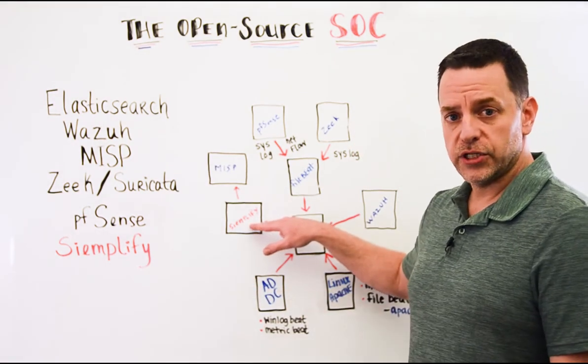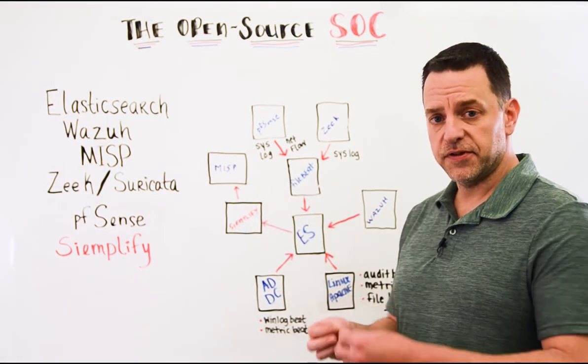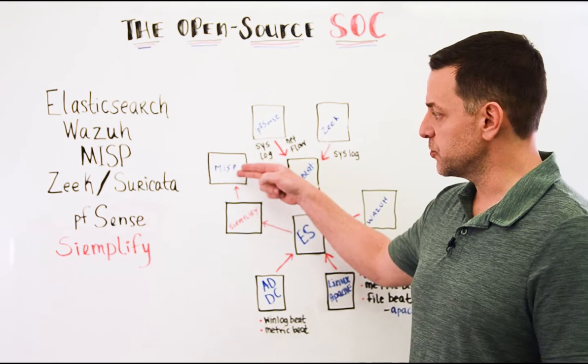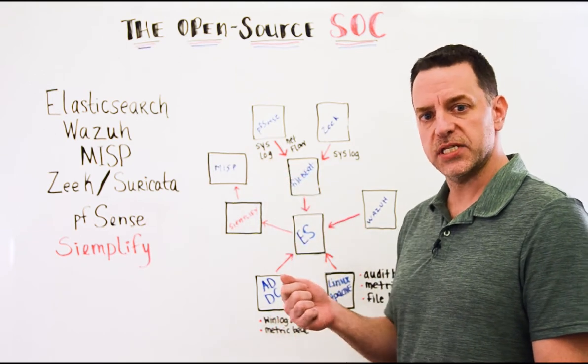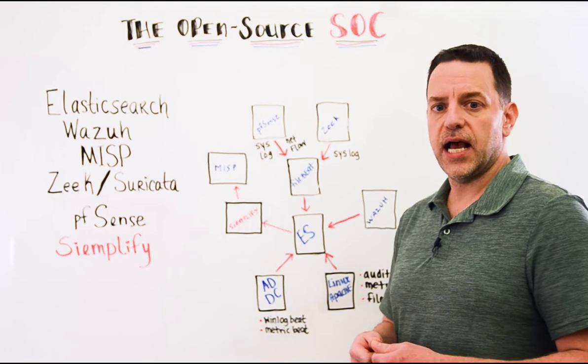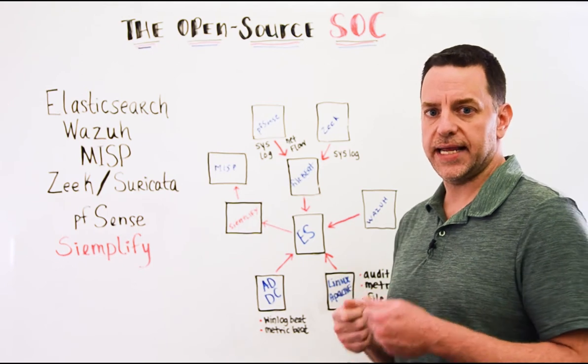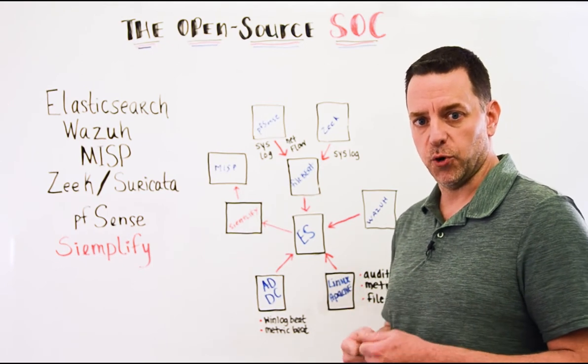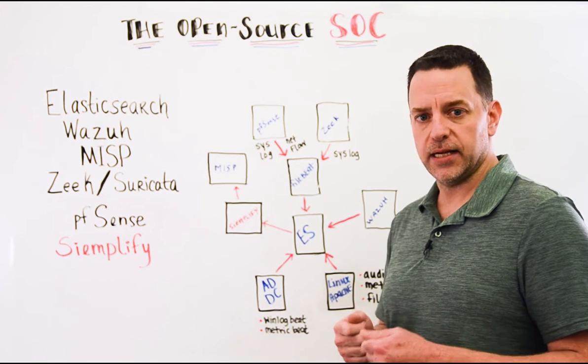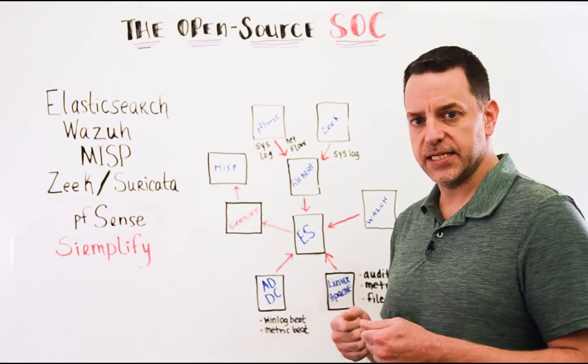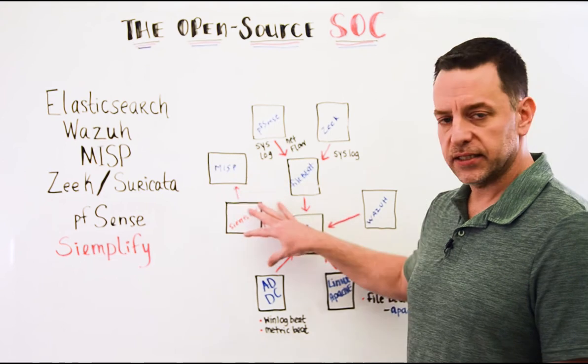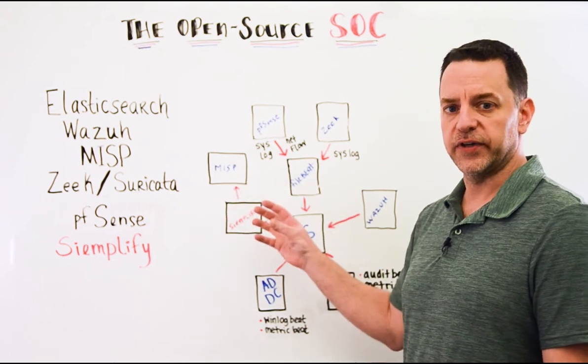Once we have our alerts ingested into Simplify and we've defined a playbook that uses MISP as an enrichment source to pull down IOCs, our analysts are now able to do intelligent case management within the platform. And that's very important that they can make good, rapid decisions based on the enrichment data and based on the single pane of glass that we provide them.